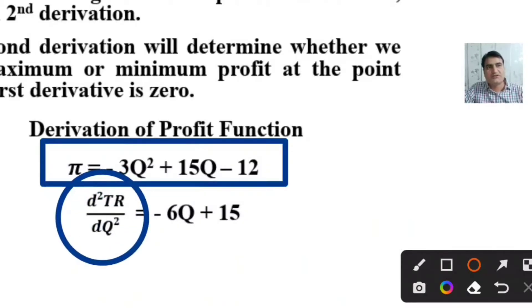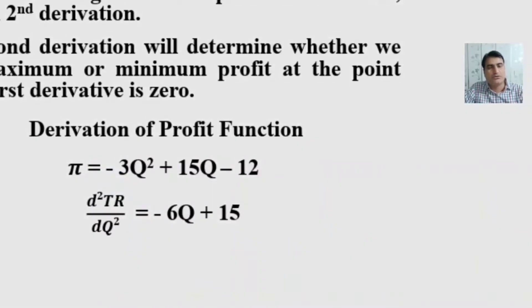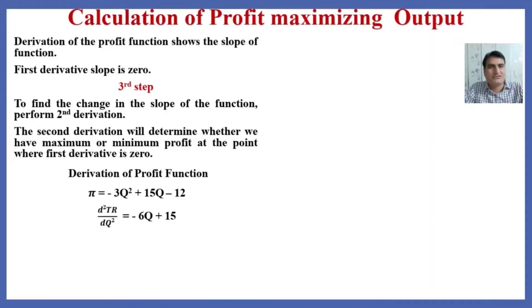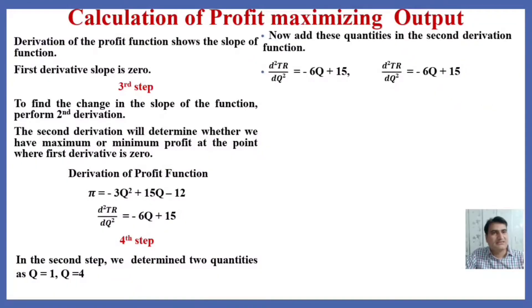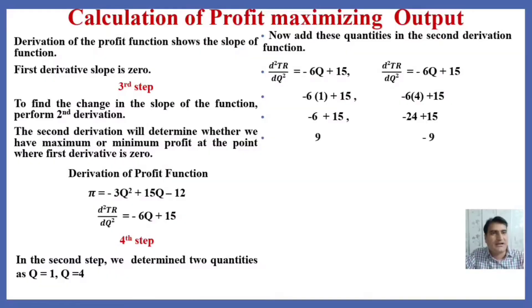We represent the second derivation as d squared π over dQ squared. Applying the derivation rule, the second derivative result is minus 6Q plus 15. Since Q equals 1 and Q equals 4, as determined previously, we put these quantity values into the second derivative function. The final results are plus 9 and minus 9.